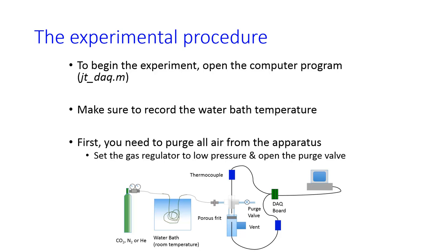A note about regulators. They measure psi above atmospheric pressure. So what's shown on the regulator is delta P. You don't need to do any subtraction.